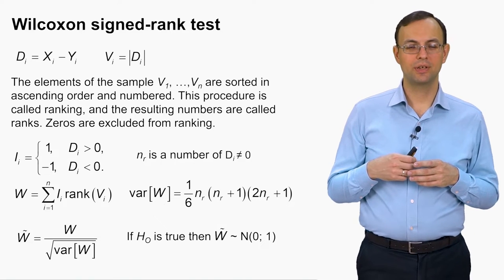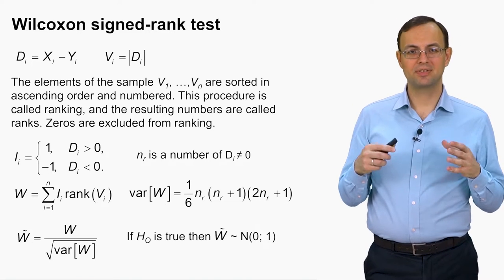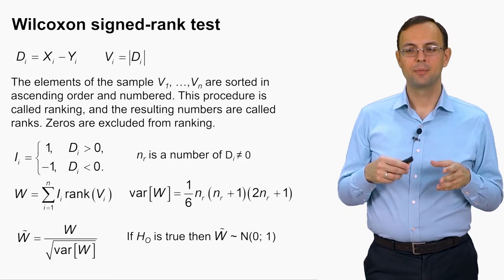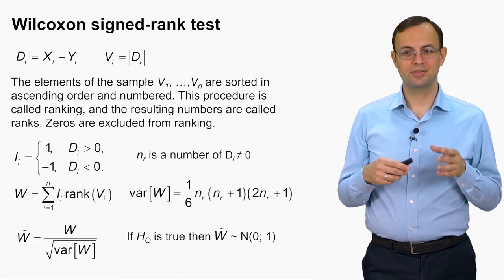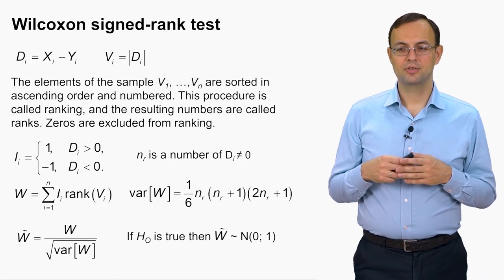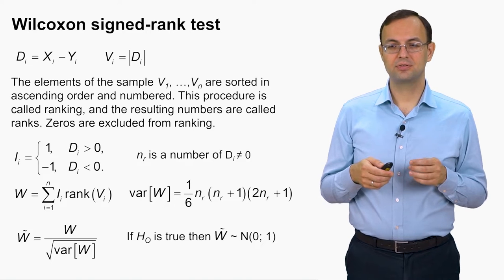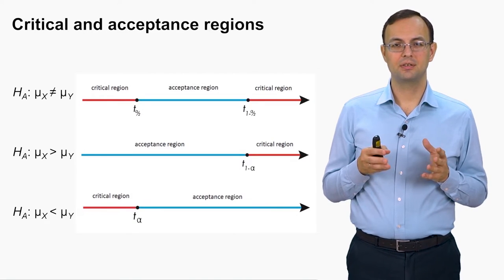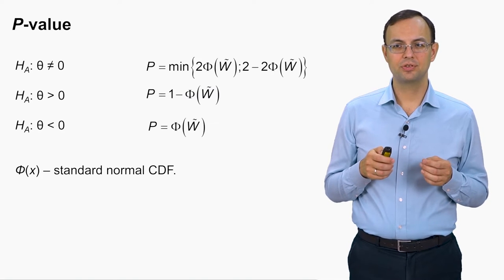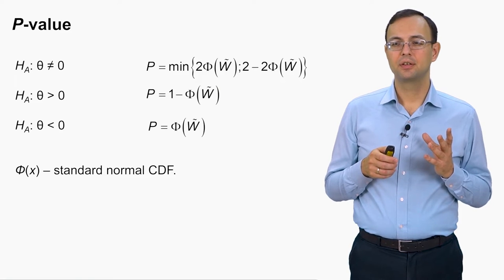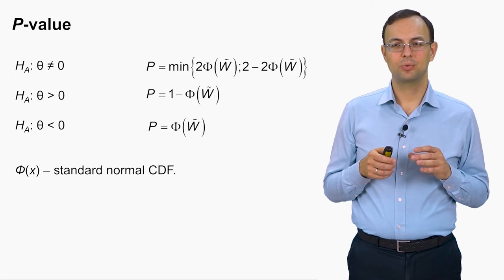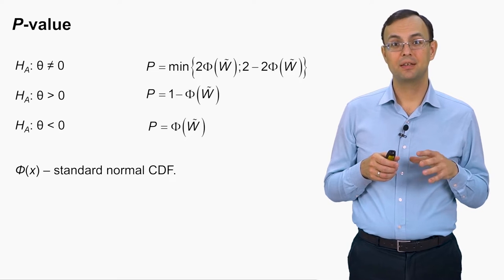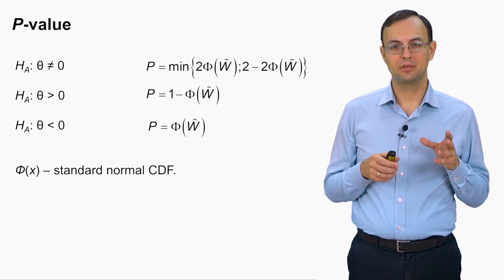And so it can be proved that when sample size is big enough, we can say that under null hypothesis the distribution of W tilde is standard normal. So as we have standard normal distribution, then we have the standard situation with critical and acceptance regions and the standard situation with p-value. The p-value can be found using the phi function using the standard normal CDF.